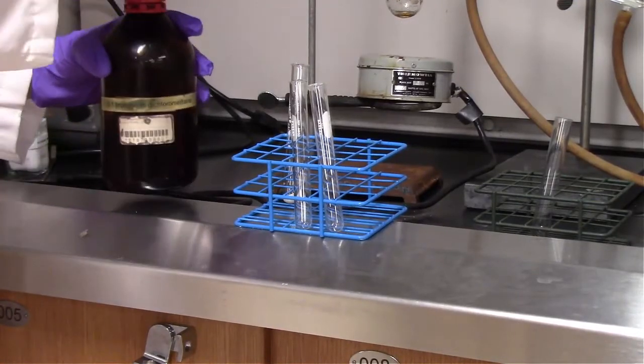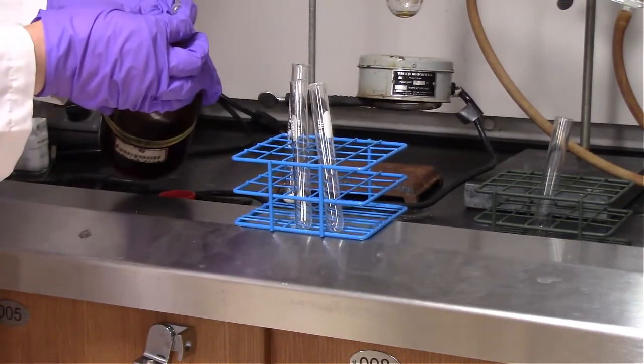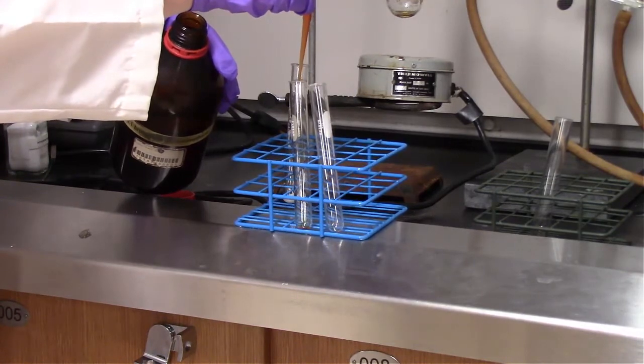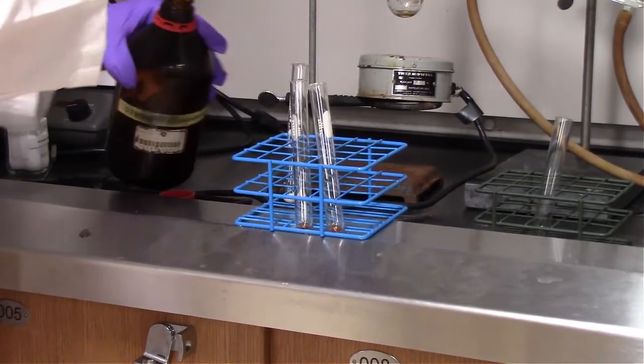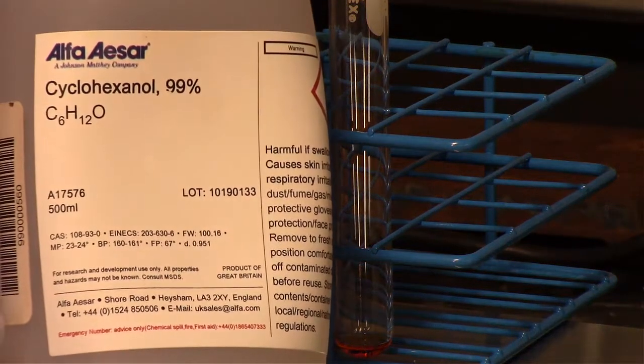At this point in the experiment, we're going to add 0.1 molar bromine dissolved in the solvent, dichloromethane. We're going to add five drops to each of the test tubes. This is our reagent. And then from here, we're going to add the starting material, cyclohexanol, to the first test tube.